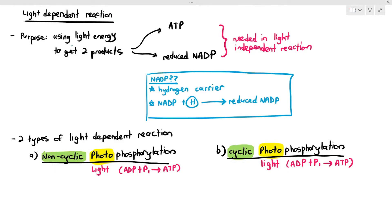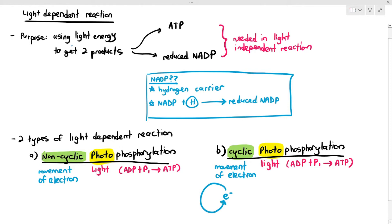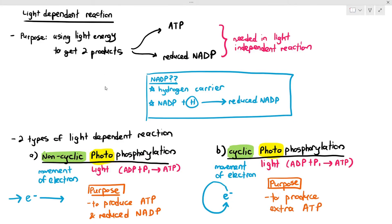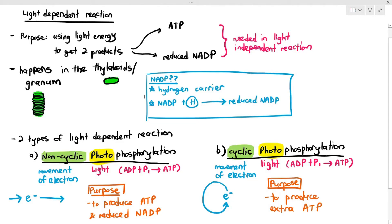The non-cyclic and cyclic part refers to the movement of electrons during this process. In the cyclic process, the electron moves and then goes back to its original spot. But in non-cyclic, the movement of the electron is linear. Non-cyclic photophosphorylation produces ATP and reduced NADP, while cyclic photophosphorylation only produces extra ATP. Both processes happen in the thylakoid or the granum.